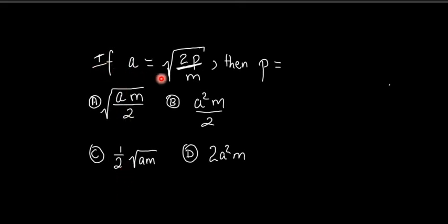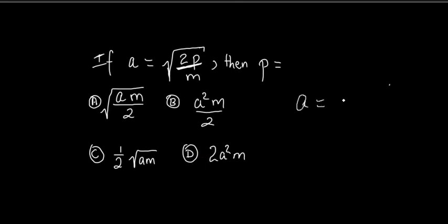This question reads: if A is equal to the square root of 2P divided by M, then P is equal to which one of these? Let me write back the problem. I want to identify what operation is affecting all the quantities or terms on the side where P is located.